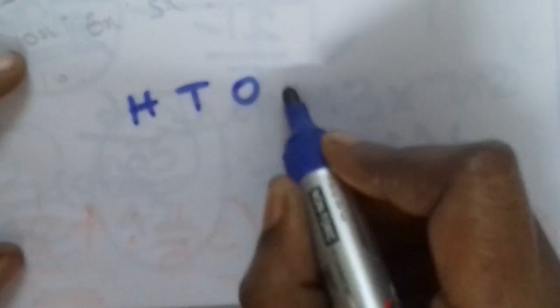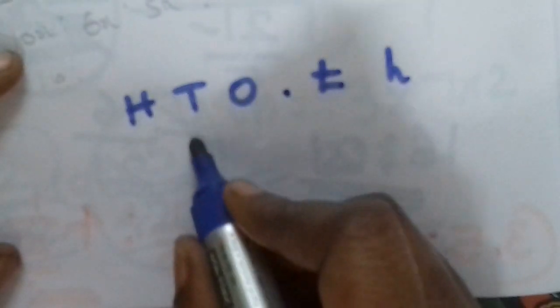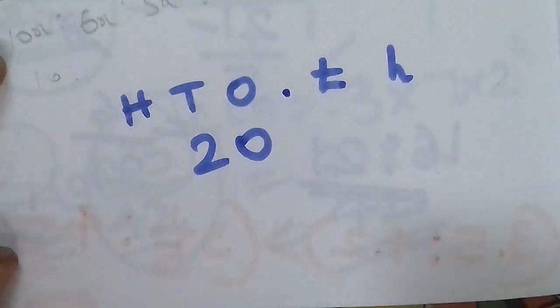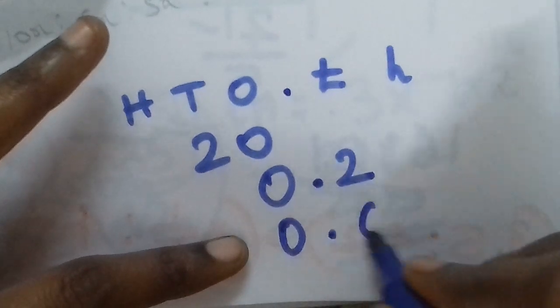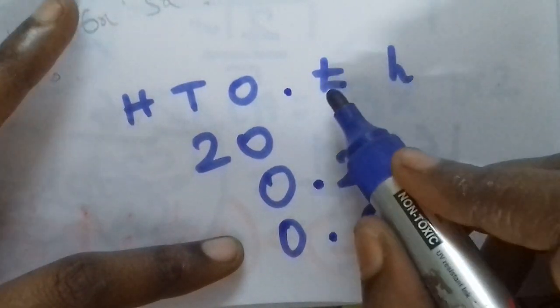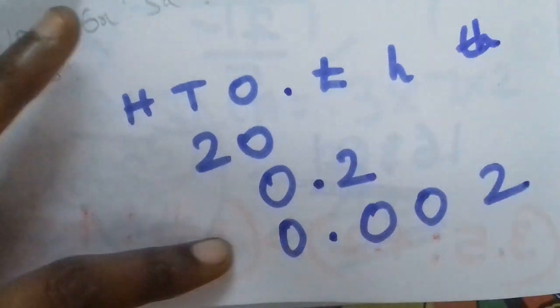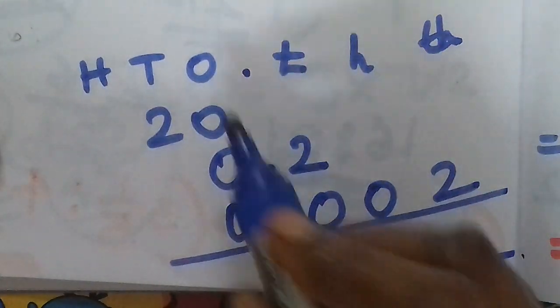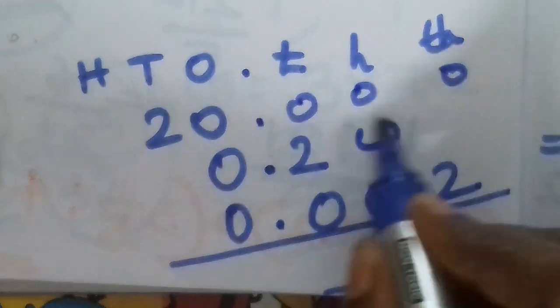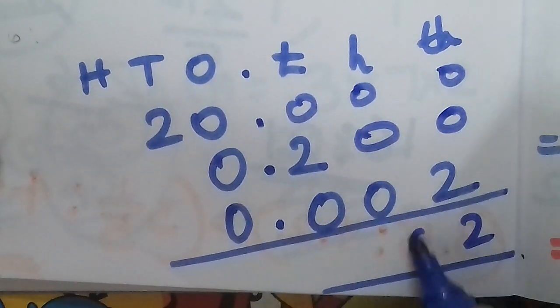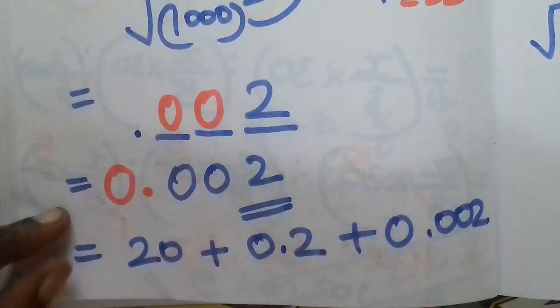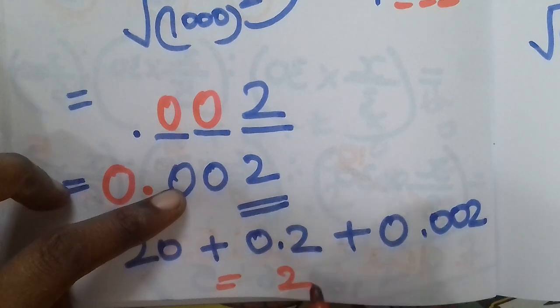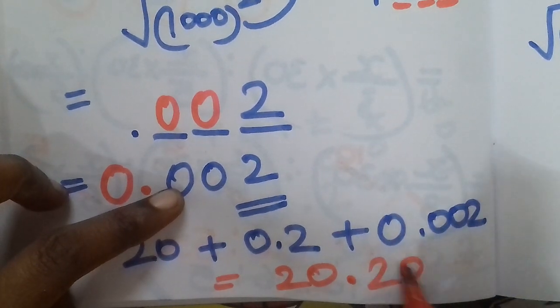Looking at place values: 20 is in the ones and tens place. Then 0.2 is in the 10th decimal place. Add 0.002 which is in the 1000th decimal place. Adding all together: 20 plus 0.2 plus 0.002 equals 20.202. So the final answer is 20.202.